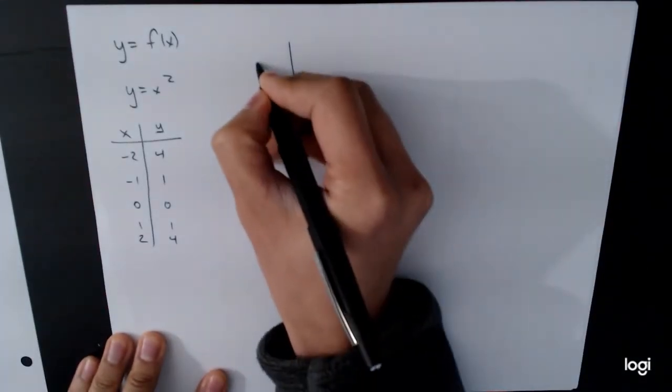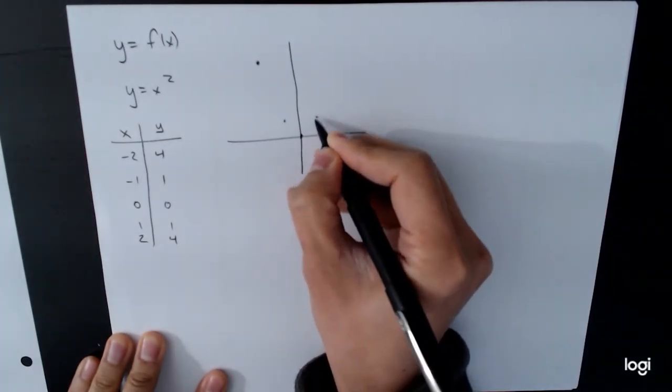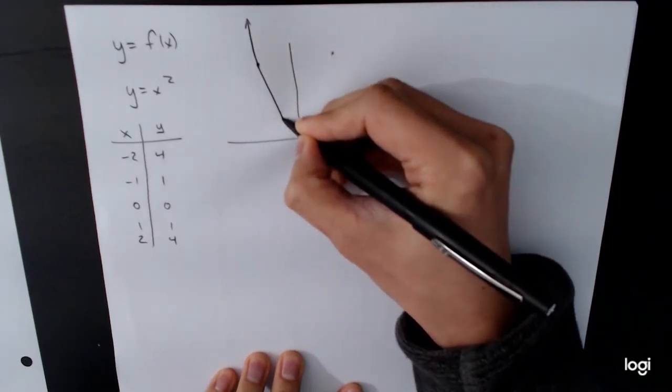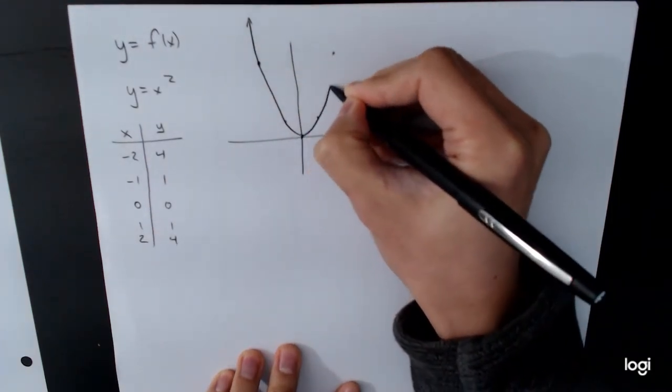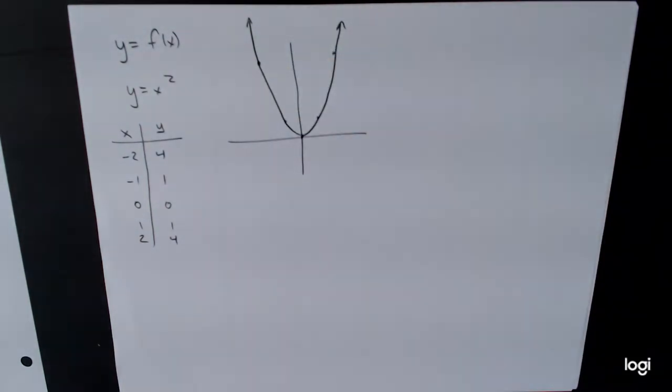And then take these points and plot them individually on a graph. So negative 1, 1, 0, 0, 1, 1, 2, 4. And then use that to get the shape of the graph by connecting all those different points together.